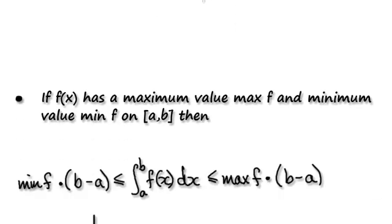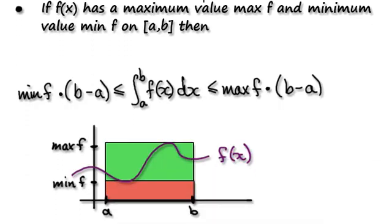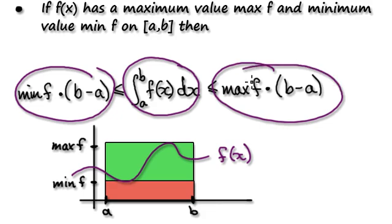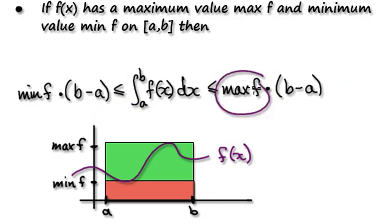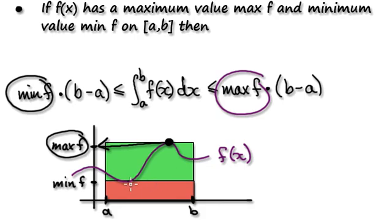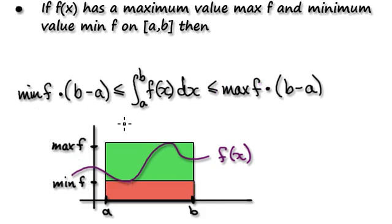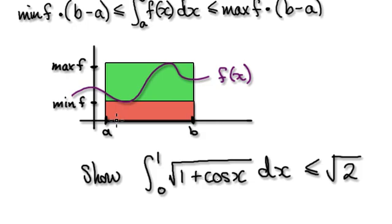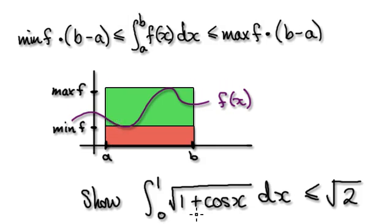Let's give you guys some more practice. We've seen this property before: the area of a function is always trapped between the smallest and the biggest. Max f is the biggest value that f of x can be, and min f is the smallest that the function can be. We've seen this property before.